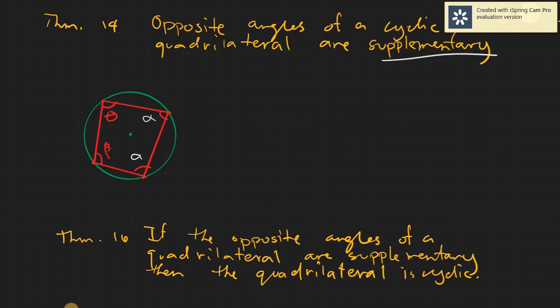Let's use the symbols A, theta, beta, and alpha. Meaning, if I add theta plus A, the answer would be 180 degrees. And if I add beta and alpha, the answer would be 180 degrees as well. So the sum is always 180 if and only if your given quadrilateral has its vertices on the circumference of the circle.